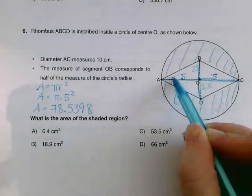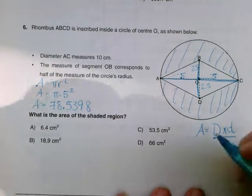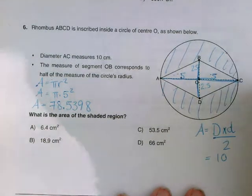So this one that goes all the way across here, we said is 10. The other one, the measure of segment OB—